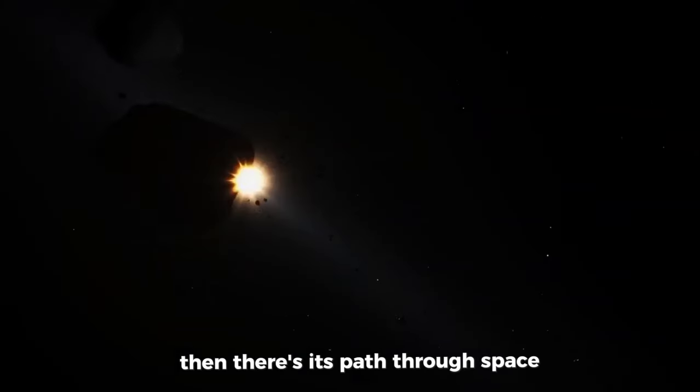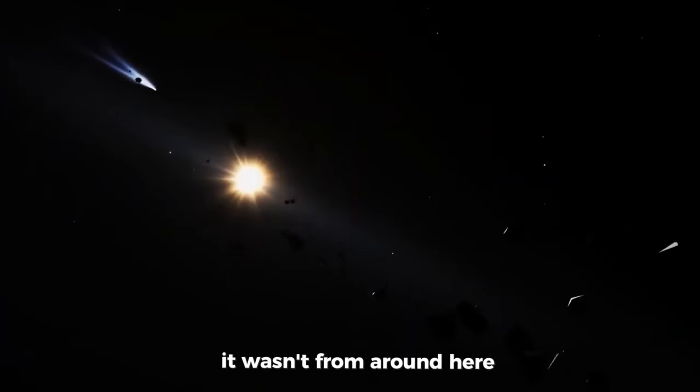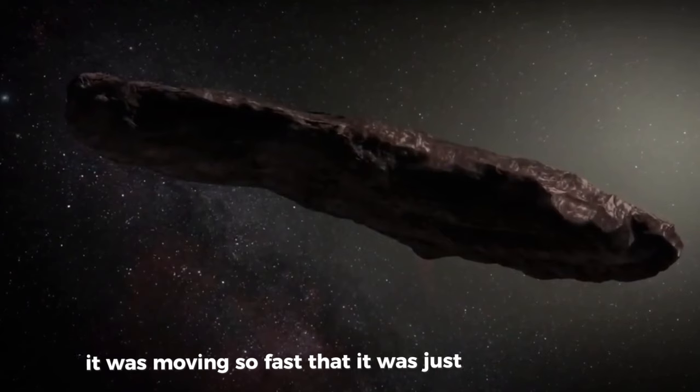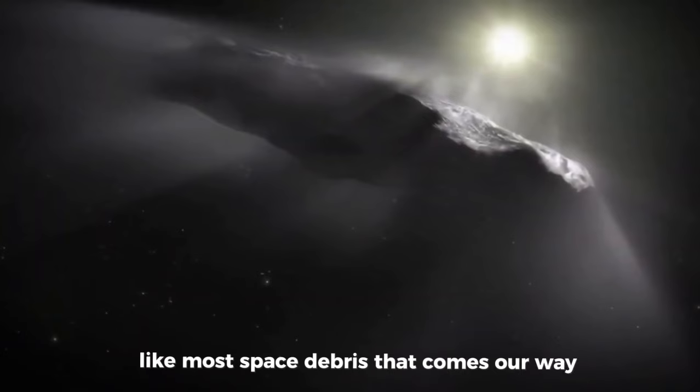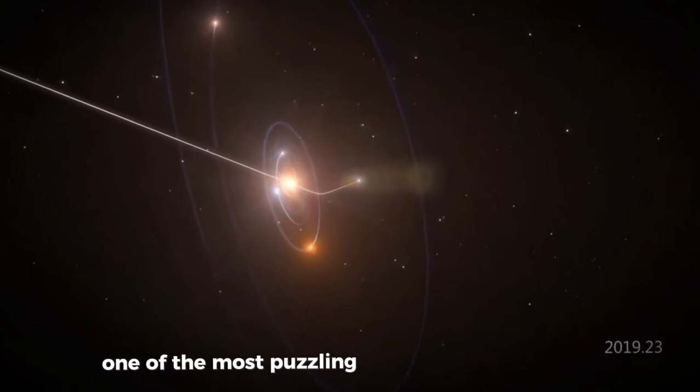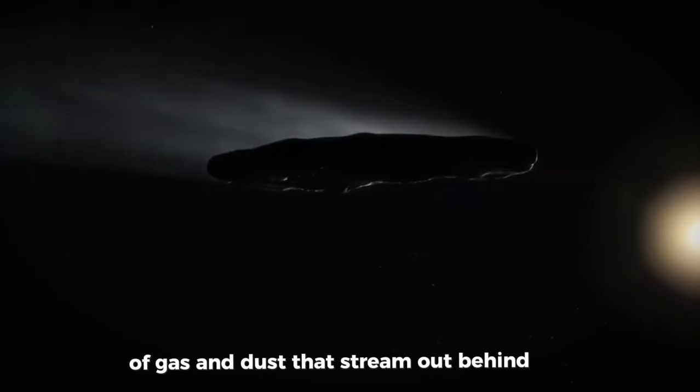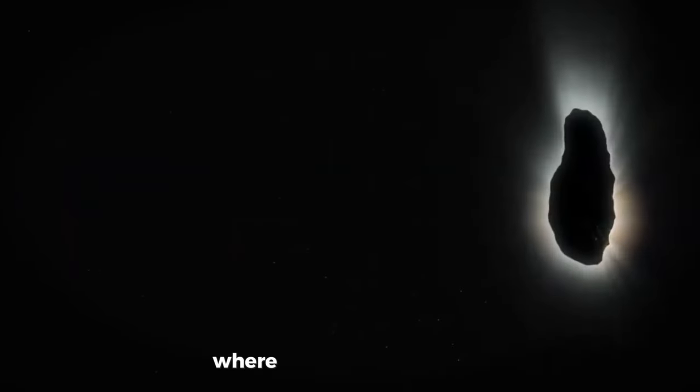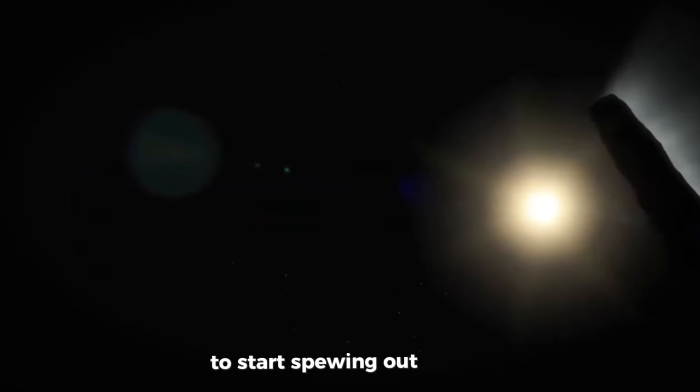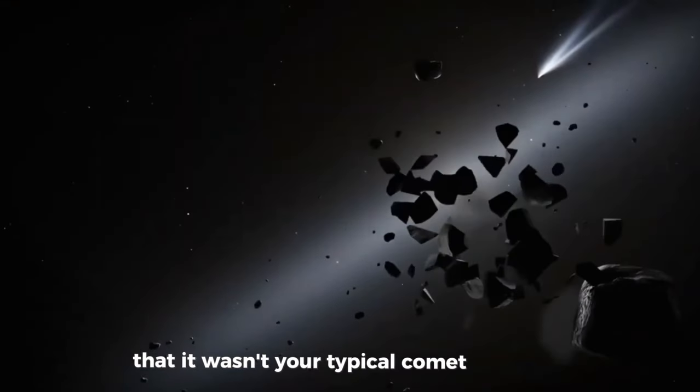Then there's its path through space. Oumuamua zipped into our solar system at a speed and angle that made it clear it wasn't from around here. It was moving so fast that it was just passing through. It did not get caught up in orbiting the sun like most space debris that comes our way. And perhaps one of the most puzzling things about Oumuamua was its lack of a cometary tail. Most comets have iconic tails of gas and dust that stream out behind them. Oumuamua didn't have one of those. Despite getting pretty close to the sun, where you'd expect a comet to start spewing out material, Oumuamua stayed tailless. This was a big clue that it wasn't your typical comet or asteroid.